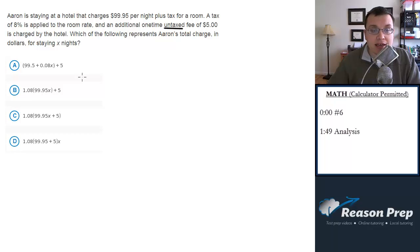This type of question is basically translating a real-life scenario into an expression. So let's figure out what we've got here. It's $99.95 per night, and Aaron's going to be staying for X nights. So right off the bat, we can say that the variable fee for staying for X nights is going to be $99.95 times X.